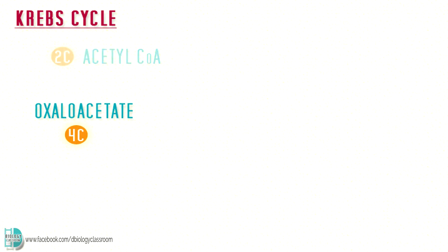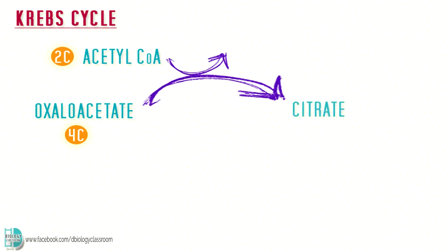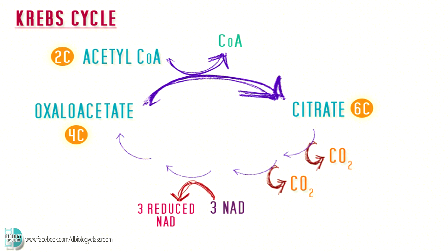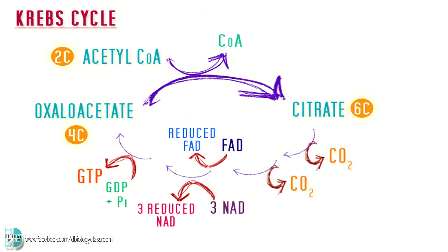A compound called oxaloacetate, which has four carbons, accepts the two-carbon fragment from acetyl-CoA. A six-carbon compound named citrate is formed, and coenzyme A can be reused in the link reaction. A series of small steps reconvert citrate to oxaloacetate. Decarboxylation occurs twice, releasing two molecules of carbon dioxide. Dehydrogenation also occurs — hydrogen atoms are removed and transferred to NAD and FAD. FAD is another coenzyme similar to NAD. Three reduced NAD and one reduced FAD are formed per cycle. GTP, a molecule similar to ATP, is produced by substrate-level phosphorylation.